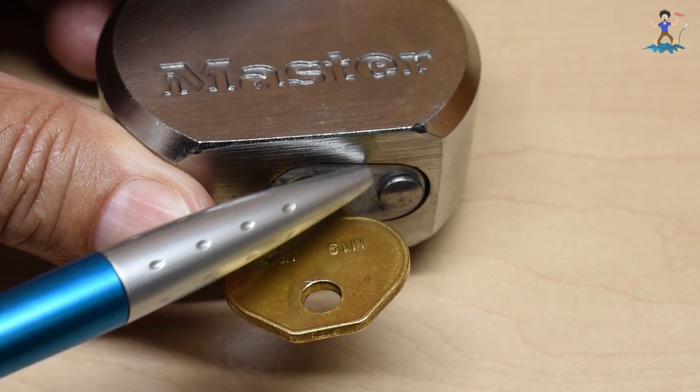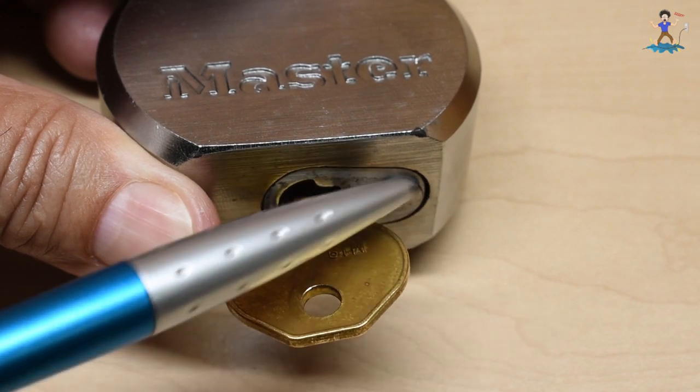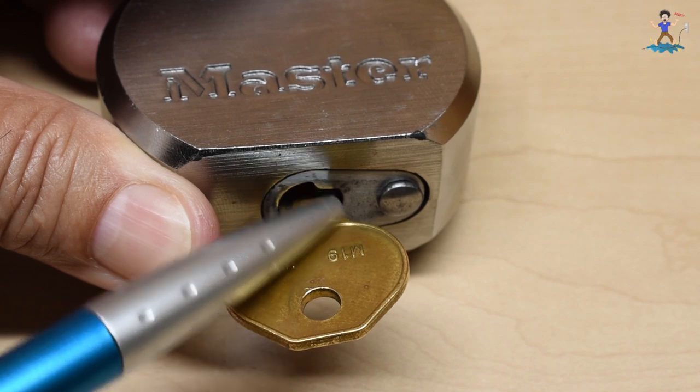But the newer Master Lock Magnums you can very easily get under that rivet and pound on it and break it and then once this plate falls off you can pull out the entire lock core.